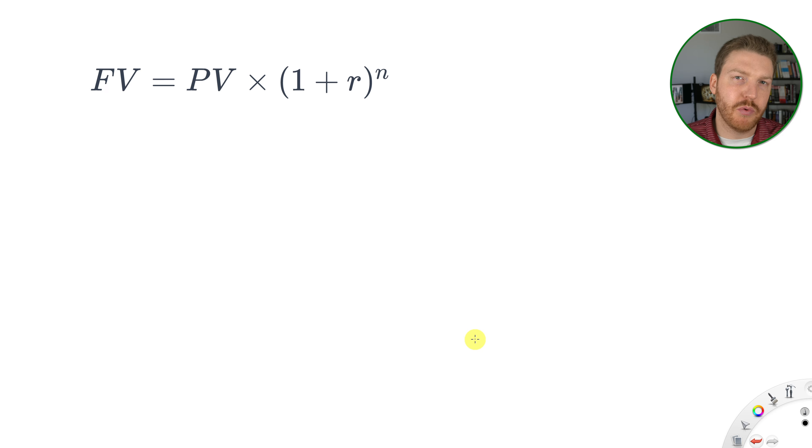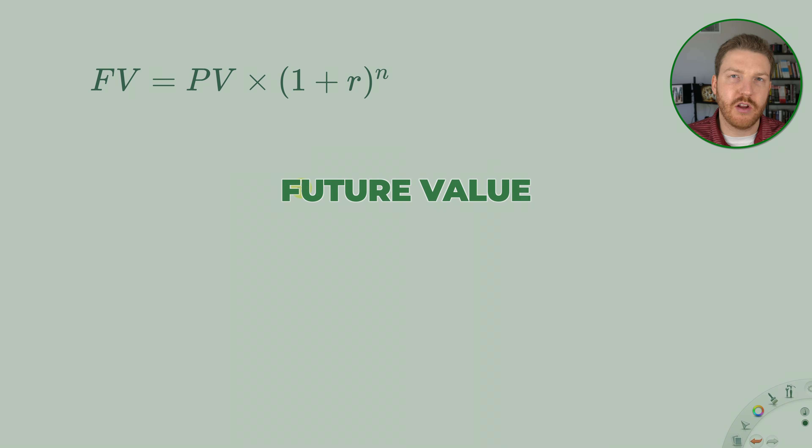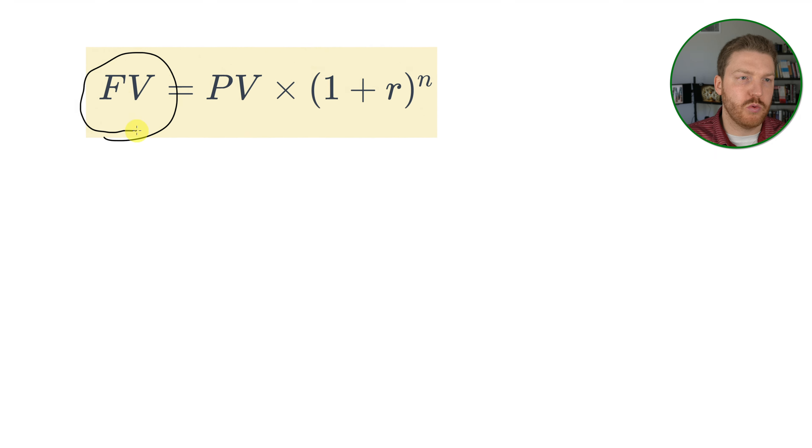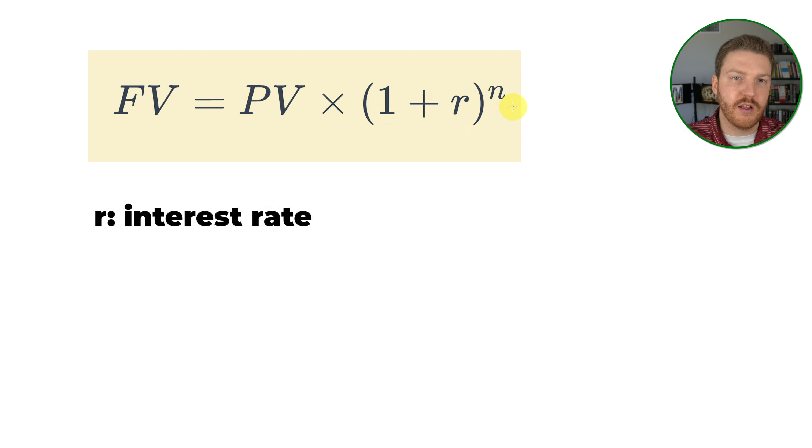Now that we know our time value of money, let's go over some really simple math. Here we're looking at our formula for future value, which we'll call FV. It is equal to the present value multiplied by 1 plus R, the interest rate, to the exponent of N, which is the number of years.